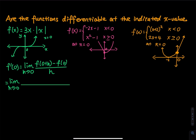Are these functions differentiable at the indicated x value? The first one, we have f of x equals 3x times absolute value of x. Is this function differentiable when x is equal to 0? I gave you a graph, so it looks like when x is equal to 0, around that region, we have a horizontal tangent line. Let's see if that is the case. For these three examples, it is kind of hard to tell whether that is differentiable or not. If you look at the next two examples, it looks like there is a sharp corner. But if that is really differentiable at 0, we have to do the derivative.